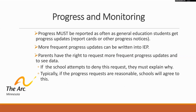Progress must be reported as often as general education students get progress updates, such as report cards or other progress notices. More frequent progress updates can be granted through the IEP plan. Parents have the right to request more frequent progress updates from their teachers — general education teachers — to see more data and improvements for the child. If a school attempts to deny this request, they need to explain why. Typically, if the progress requests are reasonable, schools will be able to comply.